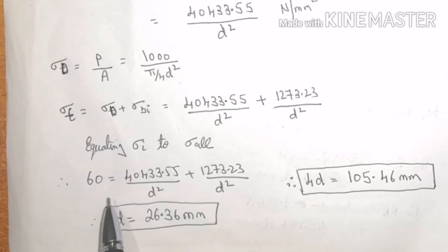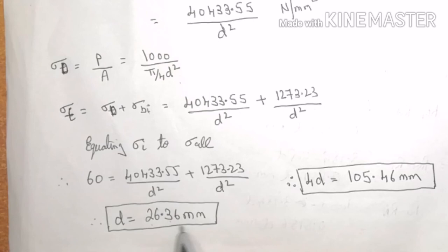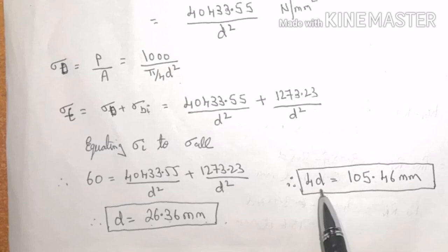On calculating this expression, I will get value of D is 26.36 mm, that is the dimension of the link or the circular section is 26.36 mm, and Rg will be 4D, that is 105.46 mm.